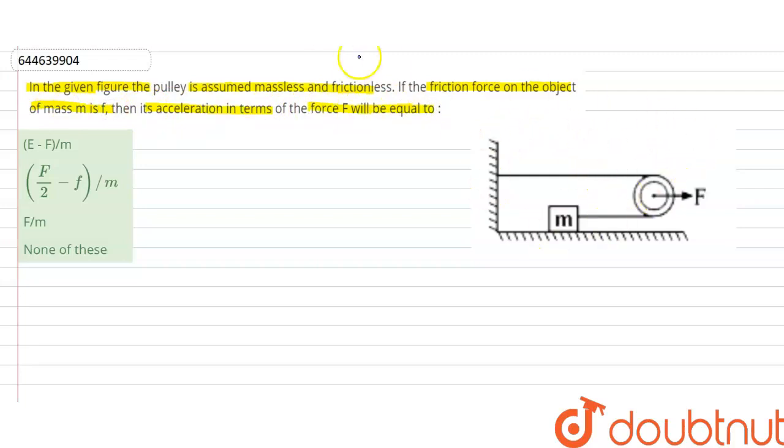So let's suppose this is our figure. In the figure our question says there is friction force F on the mass m. Let's suppose our friction force is acting on this block which is backward. So this is our friction offered by the ground and this is equal to F.